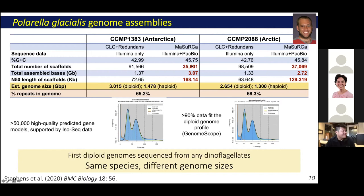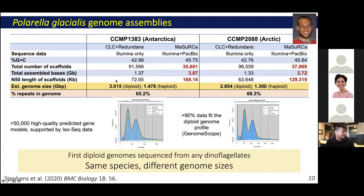For the larger genomes of the free-living relative, PacBio data helped us in creating a more contiguous assembly — the Masuka assembly — but we still ended up with close to 36,000 to 37,000 scaffolds, which is still a significant improvement. For two isolates of the same species, what we call Polarella glacialis, we actually generated the first diploid genome assemblies from any dinoflagellates. Interestingly, one isolate — the Antarctic isolate — has a deployed genome size of three gigabases compared to 2.65 gigabases in the Arctic isolate. That's about 360 megabases more. These regions are largely repetitive and do not impact genic regions. So two isolates, one species, two very different genome sizes.